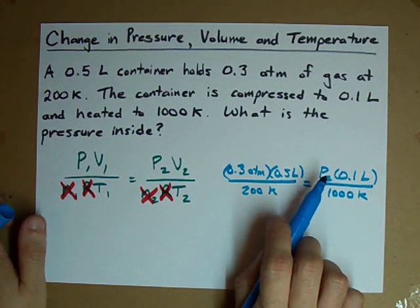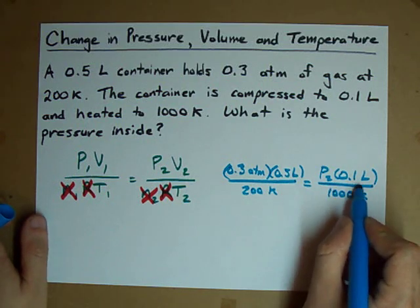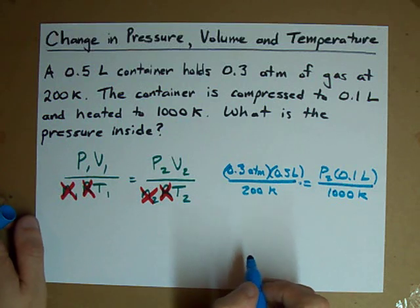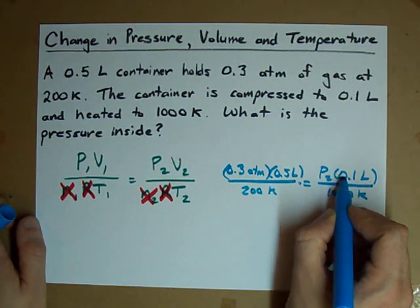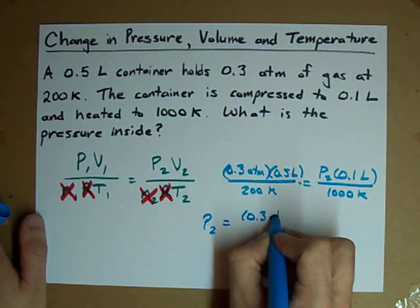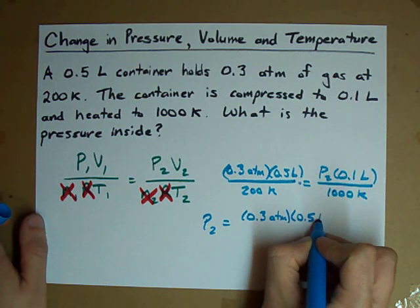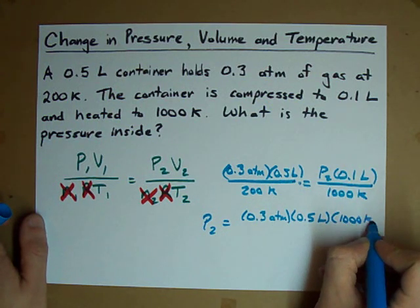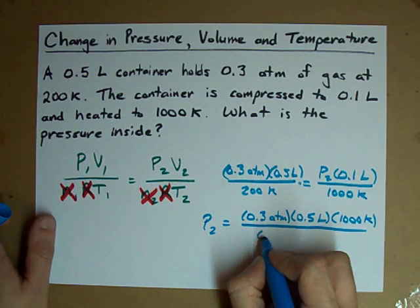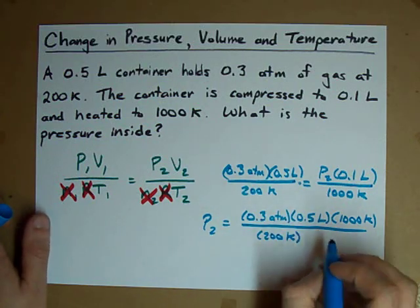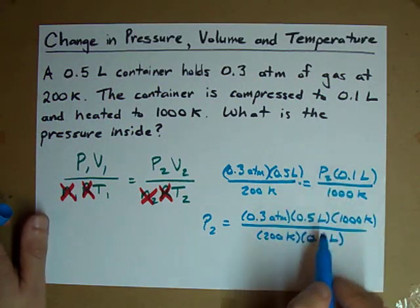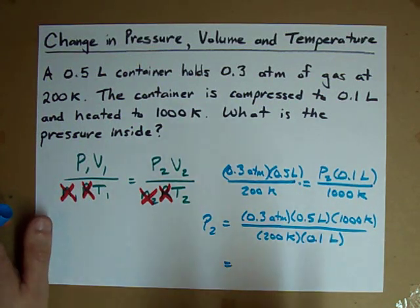The question is, how do we solve for P2? We have to undo division by 1,000, so we'll multiply on this side. And we have to undo multiplication by 0.1, so we divide on this side. What you end up with is 0.3 atmospheres times 0.5 liters times 1,000 Kelvin—notice we undid division by multiplying. On the bottom, we have 200 Kelvin, but we also divide by 0.1 liters. Notice we undid multiplication with division.